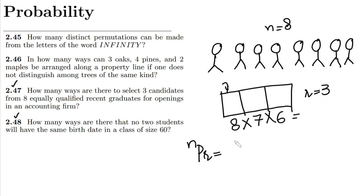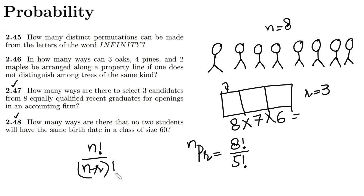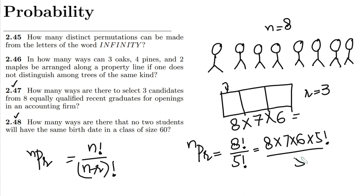Writing it here, I will get 8 factorial divided by (8 minus 3) factorial, which is 5 factorial, because the formula is n factorial divided by (n minus r) factorial — that is nPr. So I will get 8 × 7 × 6 × 5 factorial, divided by 5 factorial. These cancel out and we get the same answer as before.